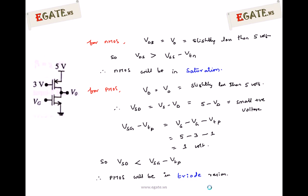For NMOS: VDS is the drain-to-source voltage. The drain terminal is connected to V0, so VDS equals V0, which is slightly less than 5V — just after switching on, the output voltage is slightly reduced from 5V. VGS minus VT is a small positive voltage, whereas VDS is a large positive voltage (just below 5V). Therefore, VDS for the NMOS transistor is greater than VGS minus VT, so NMOS will definitely be in the saturation region.